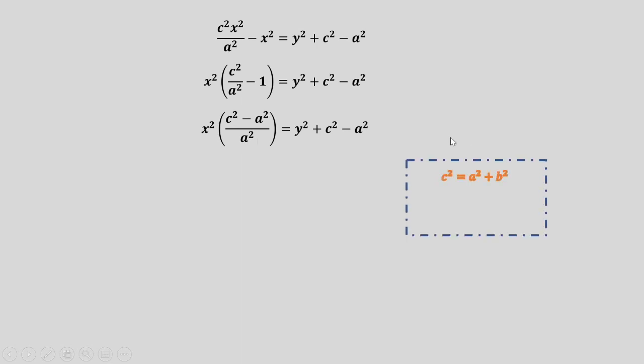For hyperbola, we can use Pythagorean theorem to represent the relationship of the three distances a, b, and c. That would be c squared equals a squared plus b squared, or we can use b squared equals c squared minus a squared. Therefore, we can substitute b squared for c squared minus a squared.